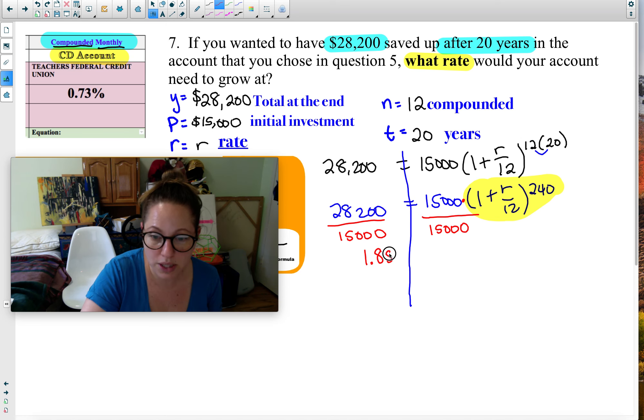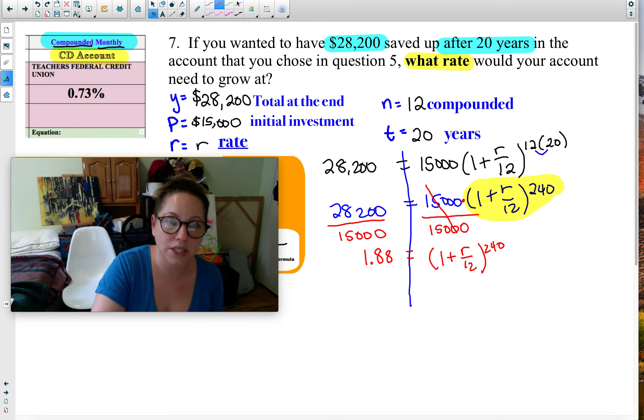I divide 28,200 divided by 15,000, and I get 1.88. Now remember, when you do this, your numbers are going to be different. So please don't write the same numbers that I have. 15,000 over 15,000, that cancels. I bring down 1 plus everything that I see there. I don't change anything. Every step, you just bring down, bring down, bring down.